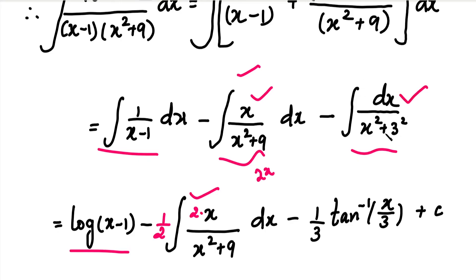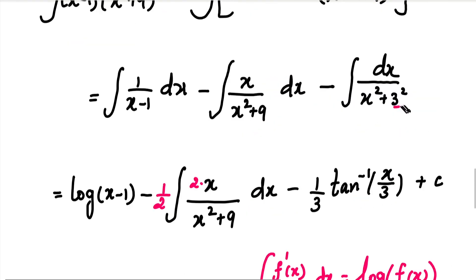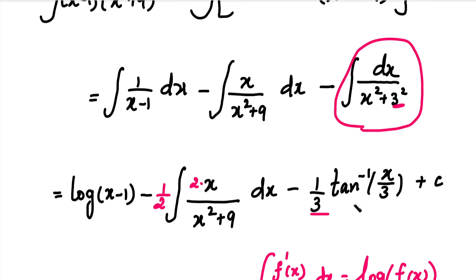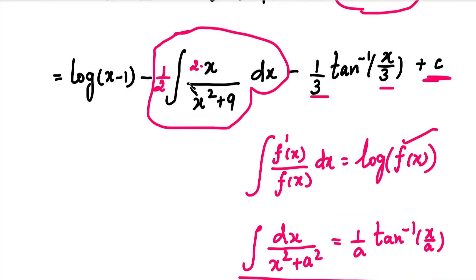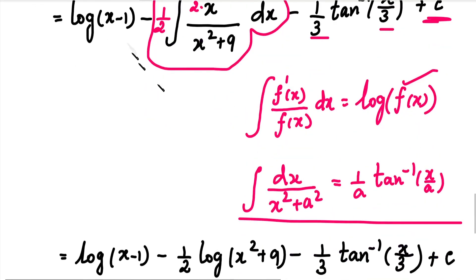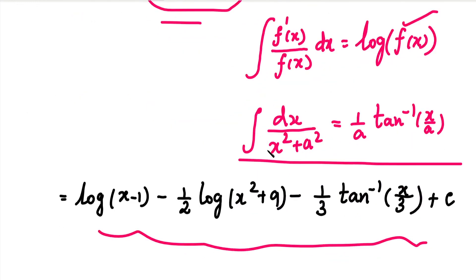The third integral is of the form dx divided by (x squared plus a squared), which is a standard formula. The denominator is x squared plus 9, so a squared equals 9. Applying the formula gives the result as (1/a) times tan inverse (x/a). So the final integral involves a log term and a tan inverse term.